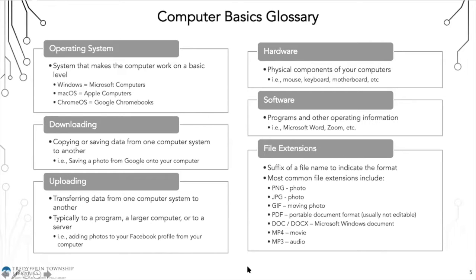The first term is operating system — this is what makes your computer work on a basic level. If you are a Windows user, you are working on Microsoft computers. Apple computers run on Mac OS and Google Chromebooks run on Chrome OS.